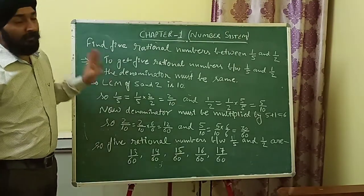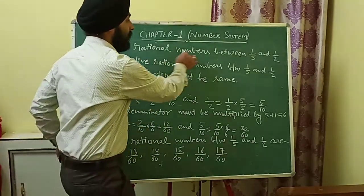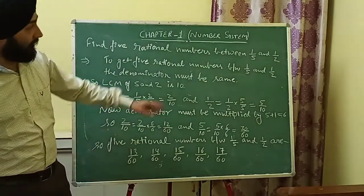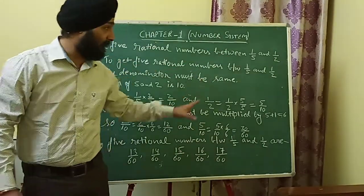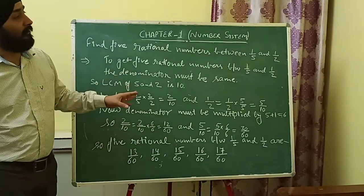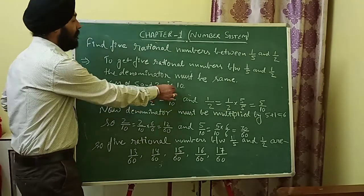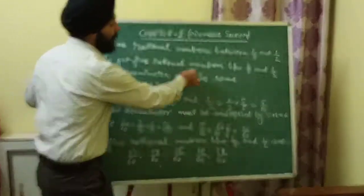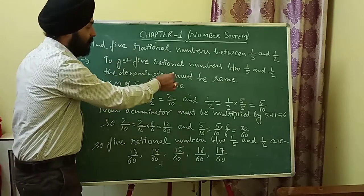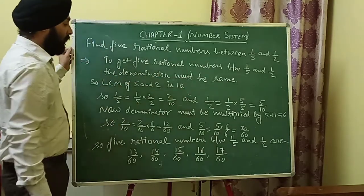Next example: find five rational numbers between 1/5 and 1/2. Here the denominators are different, so first we have to make the denominators the same by taking the LCM of 5 and 2, which is 10.